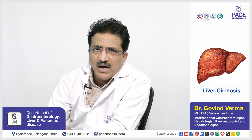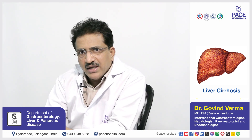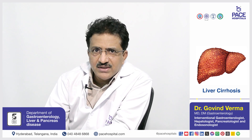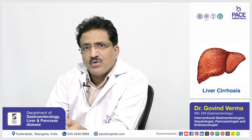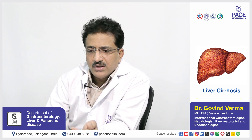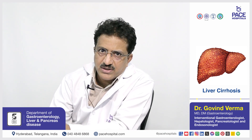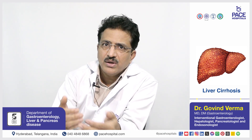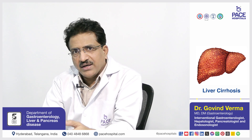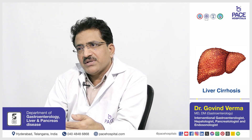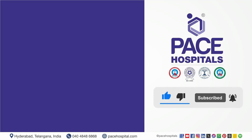Whereas, if the patient has a high globulin as compared to albumin, there can still be liver disease because of a different reason which we call autoimmune etiology. A patient with autoimmune liver disease or cirrhosis can have a high globulin as compared to albumin, giving an idea that the patient has liver disease because of this etiology.